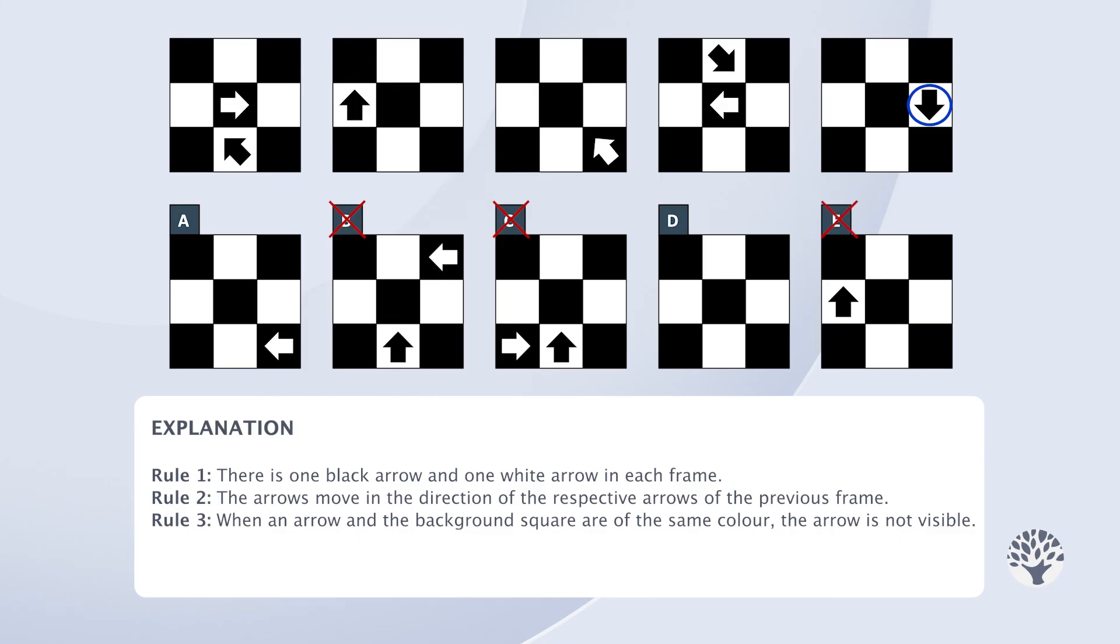Out of answer options A and D we can rule out A since the white arrow couldn't possibly have moved all the way from the centre left where it was invisible in frame five to the bottom left in the next frame. So the answer is D.